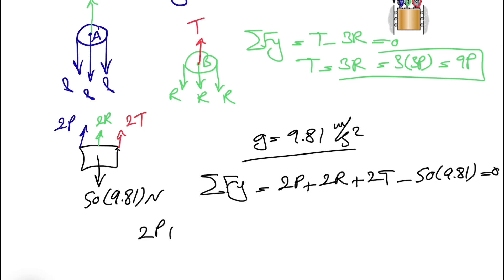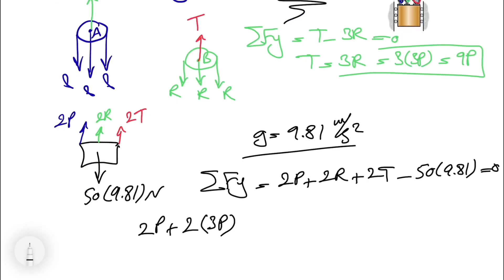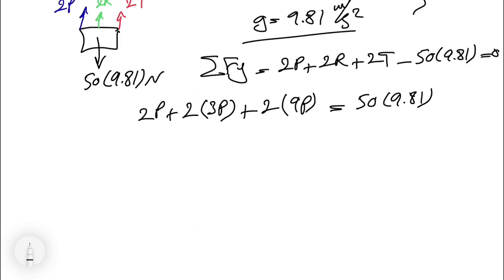We have 2P plus 2R, which we know from the previous part, R equals to 3P. Plus, we have 2T, which again, we know T equals to 9P. And this will be equal to 50 times 9.81.